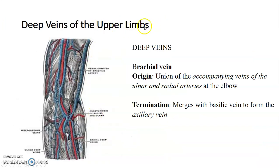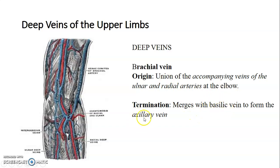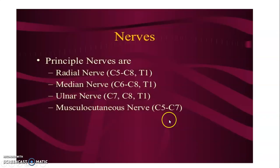Now the deep veins of the upper limb — the brachial veins: where do they originate? When the radial and ulnar veins unite, they form the brachial vein. The veins accompanying the ulnar and radial arteries unite at the elbow to form the brachial vein. At mid-arm, the brachial vein is joined by the basilic vein to form the axillary vein.